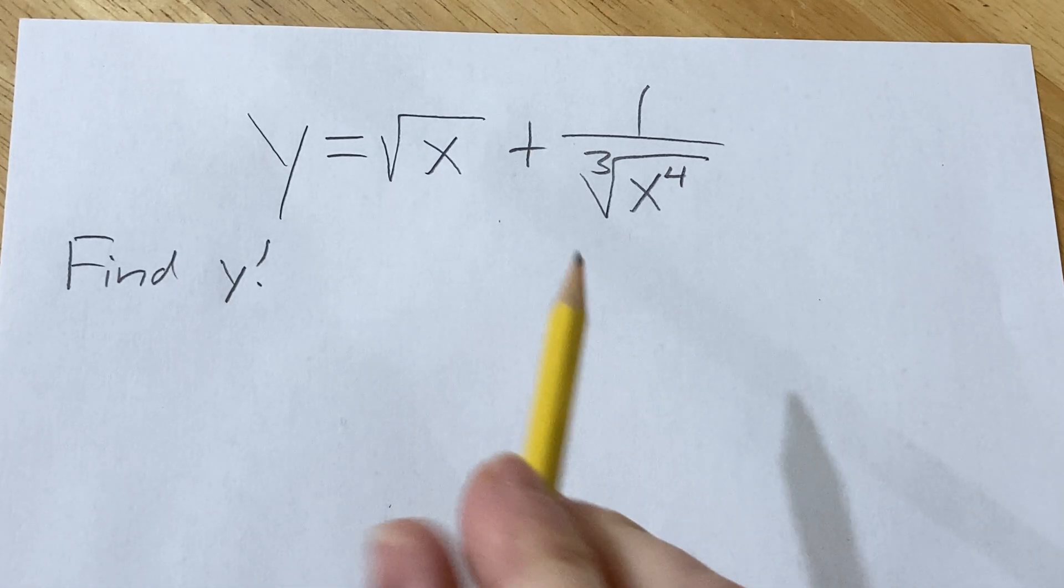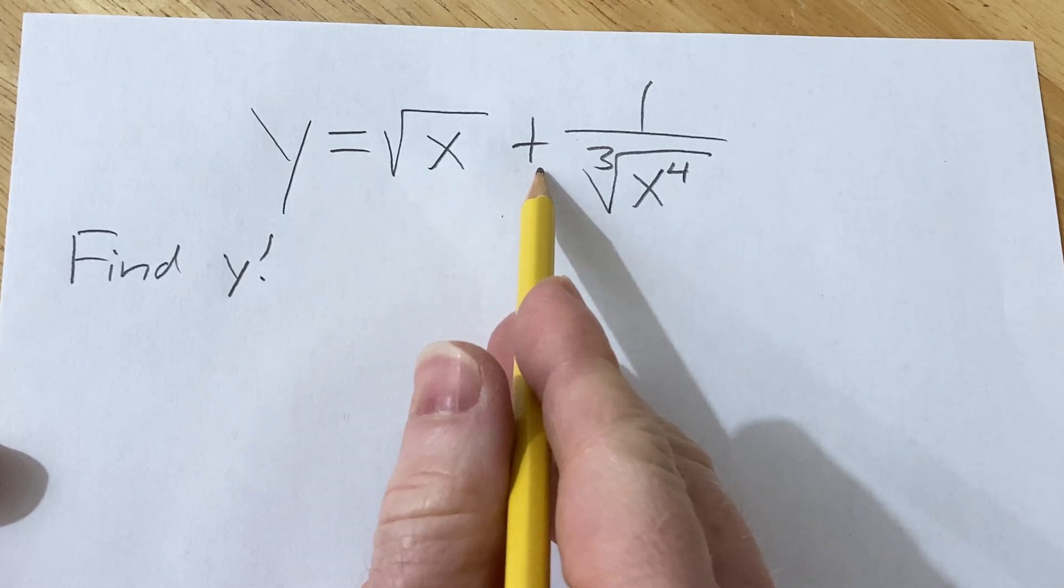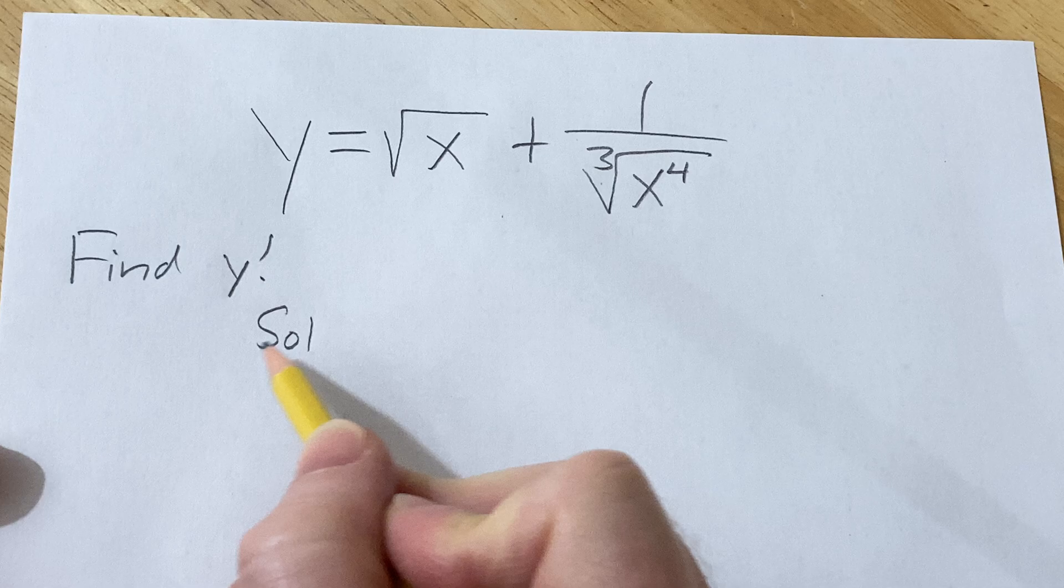Hello, in this video we're going to find the derivative of this function. We have y equal to the square root of x plus 1 over the cube root of x to the fourth.